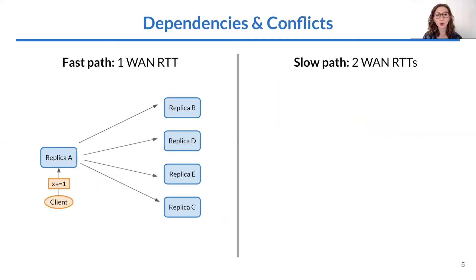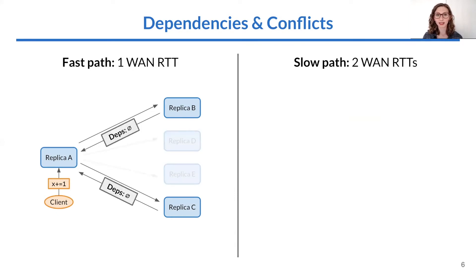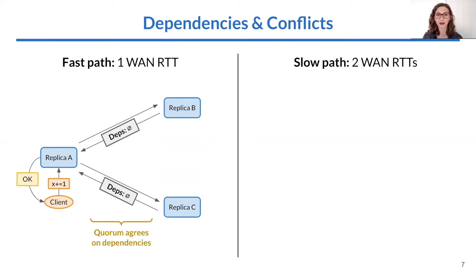When a client wants to commit an operation, it will issue the operation to its nearest replica, which will send out the operation to the other replicas. A quorum of replicas, which in this case is two of the other four nodes, will respond with the dependencies that they know about. In this case, this is the first operation in the system, so the quorum agrees that the operation has no dependencies, and it commits in one WAN RTT.